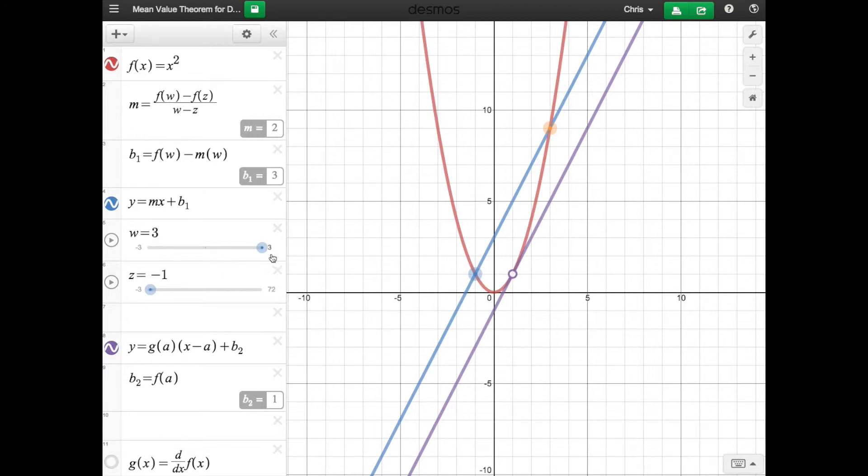You can control your w and z right here if you want to change them. I'm just going to keep them where they are for right now. This part right here, based on Mean Value Theorem, it states